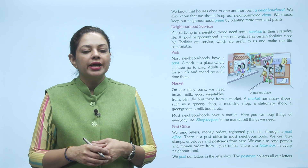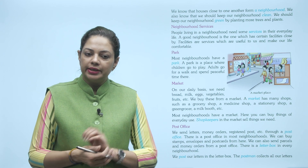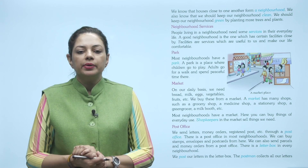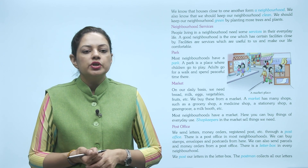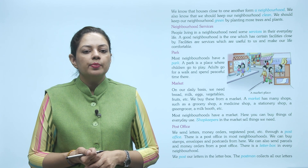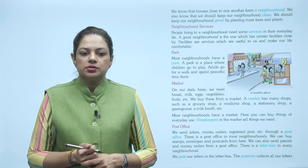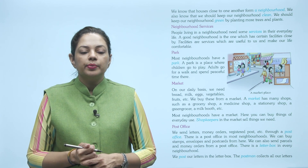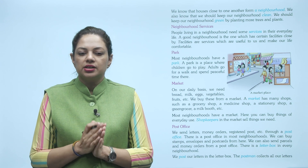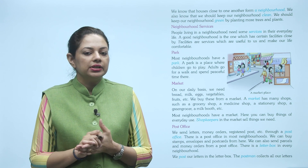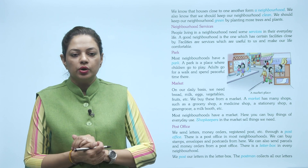We also know that we should keep our neighborhood clean. Hame ye bhi patah hai ki hame apna neighborhood saaf rakhna chahiye. We should keep our neighborhood green by planting more trees and plants. Aur humay apna neighborhood green rakhna chahiye — hara rakhna chahiye, saaf rakhna chahiye — bohot saare paid podhe uga kar.